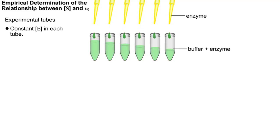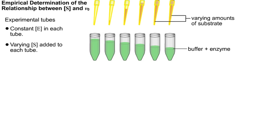Each tube contains a constant amount of enzyme. But the amount of substrate placed in each tube varies. For easy analysis, the biochemist often chooses a substrate that yields a product that has a different color or different fluorescence.